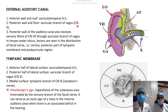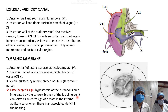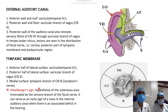In herpes zoster oticus, which is infection of the facial nerve fibers, lesions will be seen in the distribution of the facial nerve — that is, in the concha, posterior part of the tympanic membrane, and postauricular region. Additionally, if there is a mass in the internal auditory canal, there will be compression of the facial nerve and vestibulocochlear nerve, causing hearing deficit and hypoesthesia in the area innervated by the sensory branch of the facial nerve — the concha and posterior tympanic membrane. This sign is known as the Hitzelberger sign and is an early sign of a mass in the internal auditory canal.